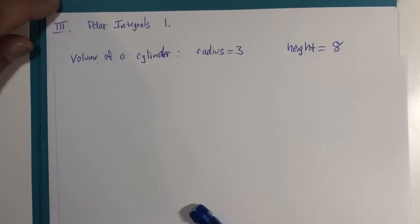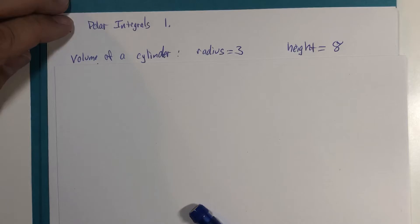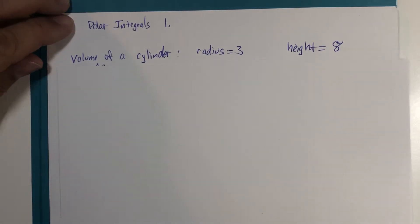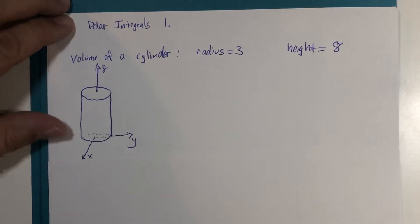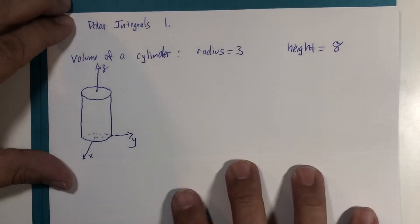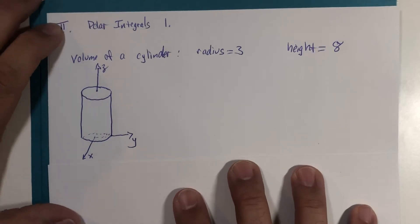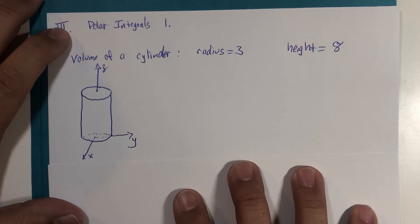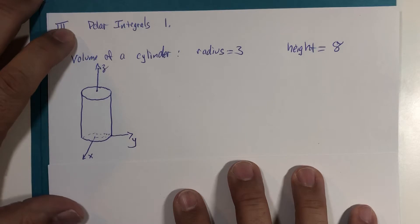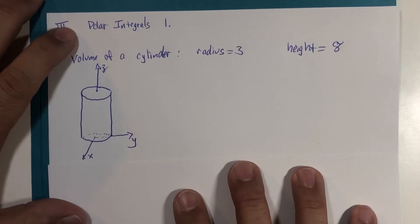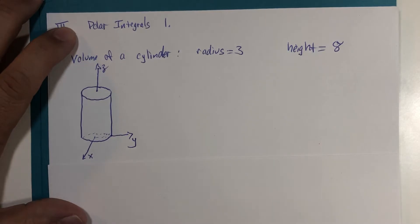We're going to look at a cylinder with a radius of 3 and a height of 8. I want you to not just think of it as a geometry shape — a cylinder — but as something in the XYZ plane that has coordinates of points on the cylinder, and there might be equations involved.